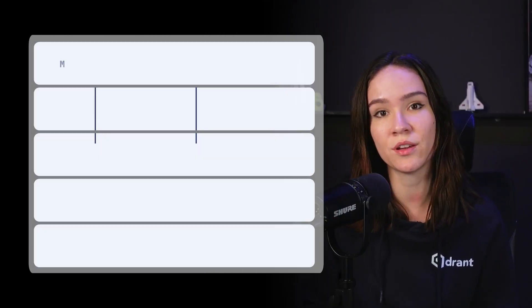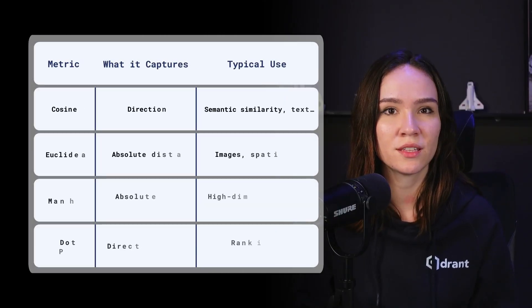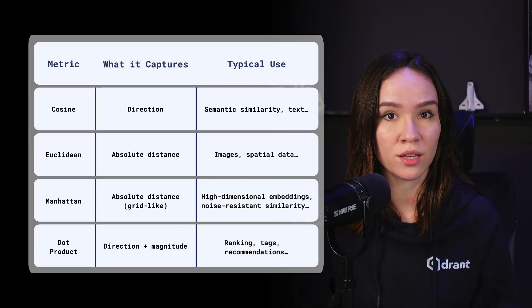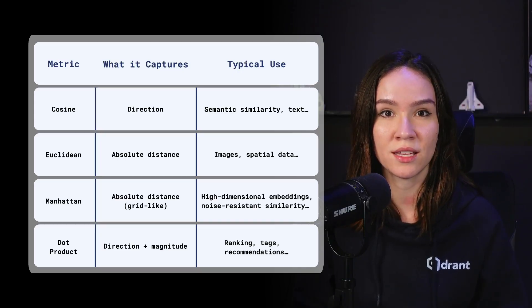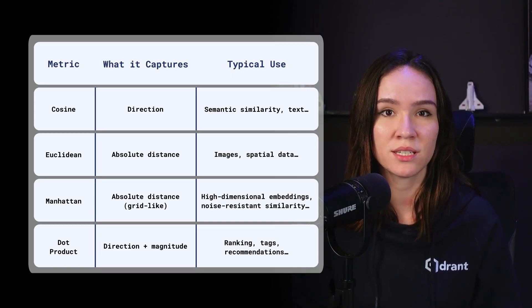There's no universal choice. It all depends on your data and what you define as similar. If you're not sure which one to use, test with a small sample — store your data in different collections and in each collection choose a different distance metric, then compare the results and see which one comes closest to what you're looking for. We'll see different distance metrics being used throughout the course, and this table carries the overall information of what we just covered.